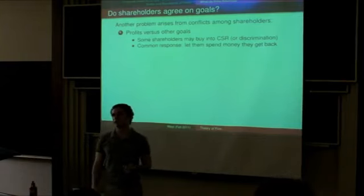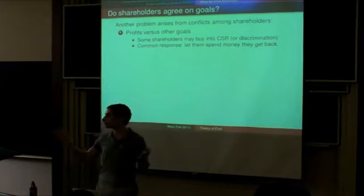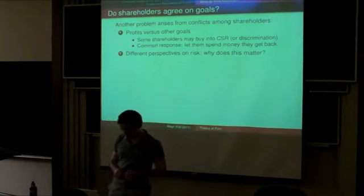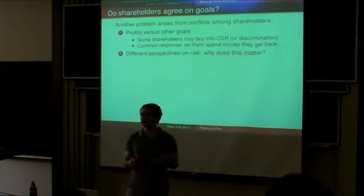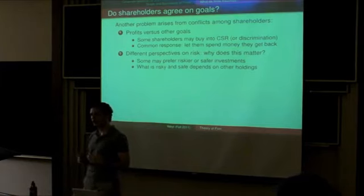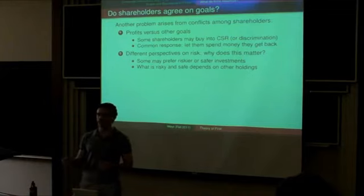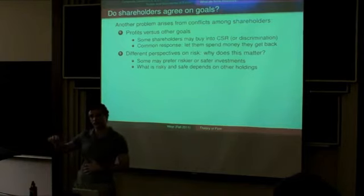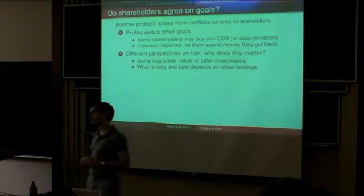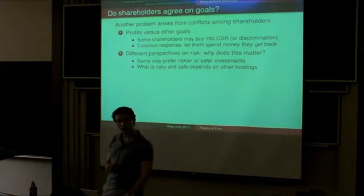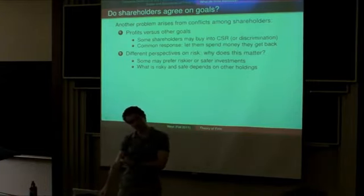A common response is that the company should try to make as much profit as possible and let people spend their money on whatever they want. Perhaps a more serious problem is that different shareholders may have different perspectives on risk — both because of different risk aversion, but also because of their other holdings. For example, a steel worker probably doesn't want a company they're investing in to make investments in steel, because that would be correlated with their job income and make their whole portfolio riskier.